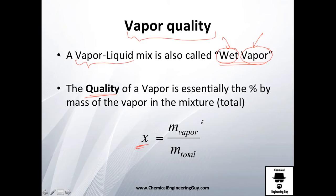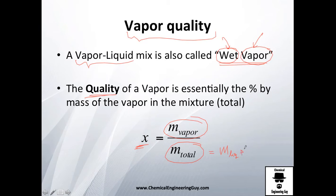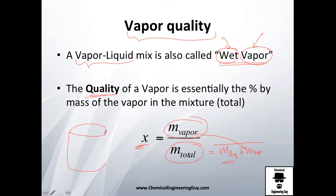The x value is the total amount of vapor versus the total amount of the mixture. This includes the mass of liquid and the mass of vapor. It makes a lot of sense — if you have a closed system with some mixture, you can track how much becomes vapor.